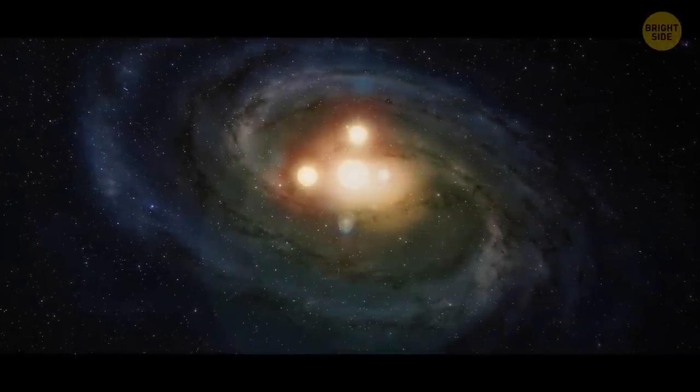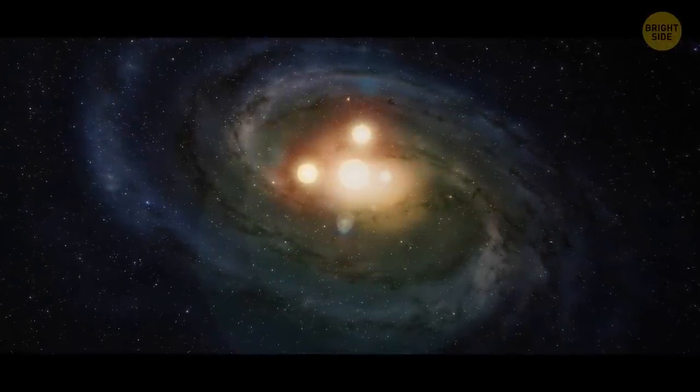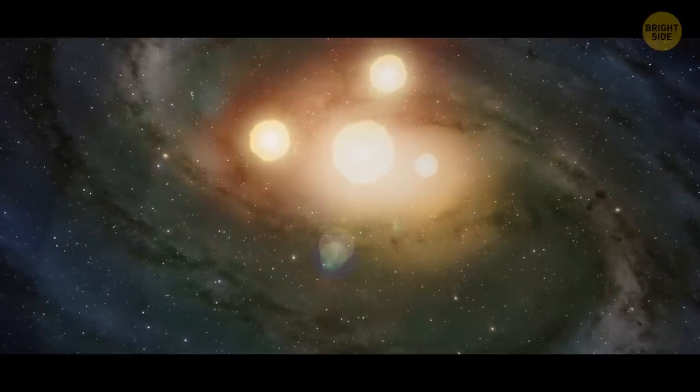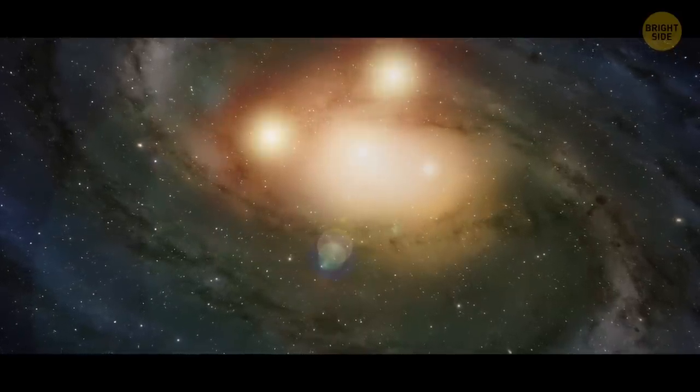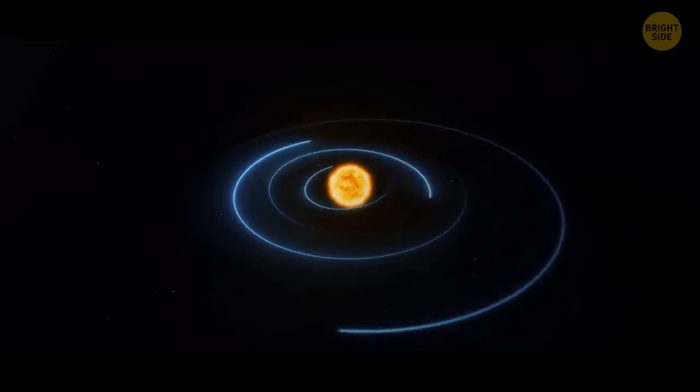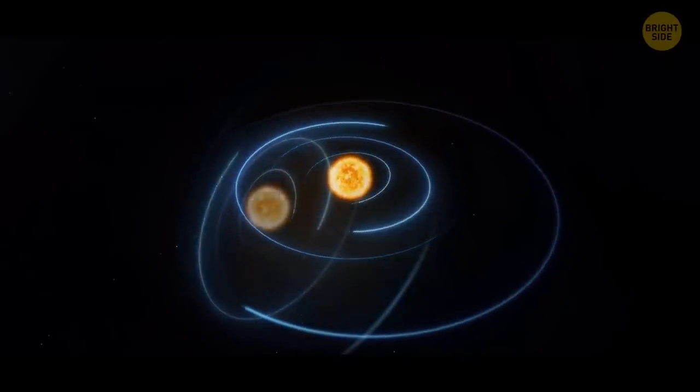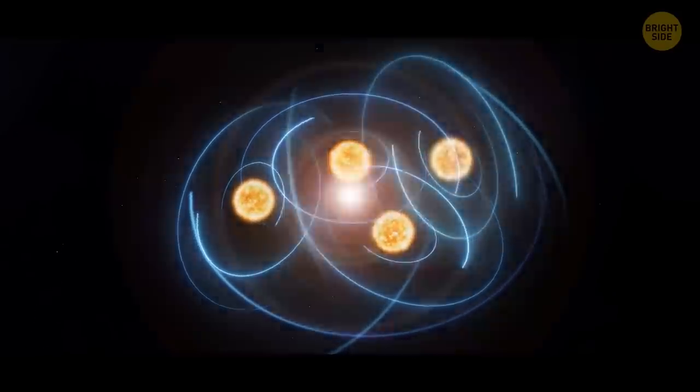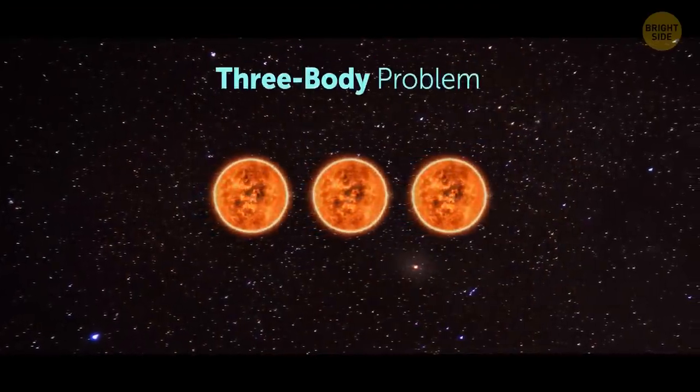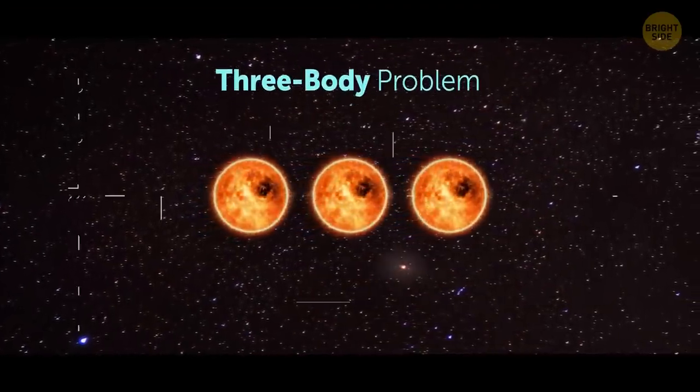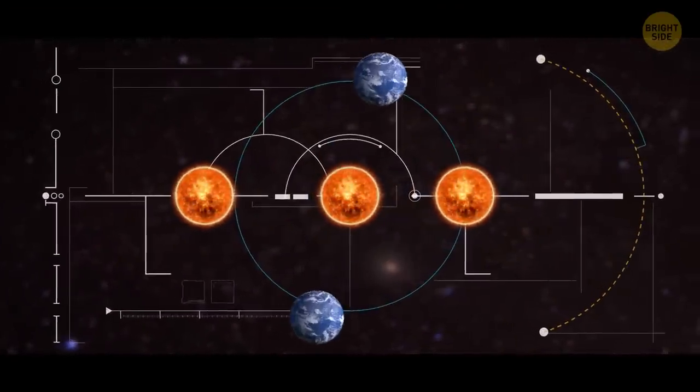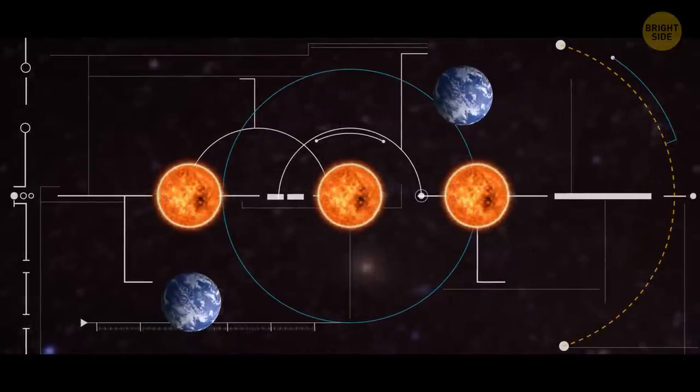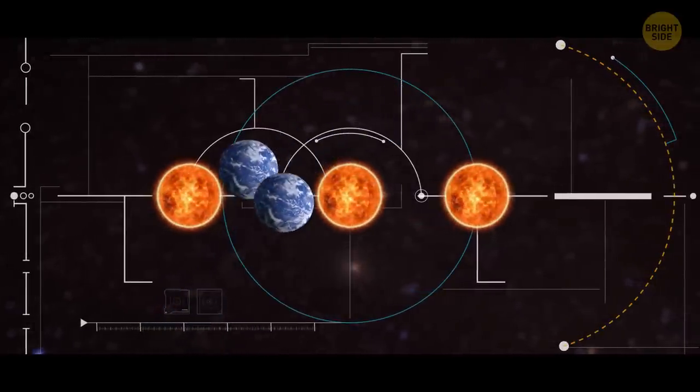But what about systems with four or even more stars? Is it even possible? Actually, yeah. But the more celestial bodies you add to the system, the more difficult it becomes. The orbits grow unstable. It's gonna be as chaotic as can be. In stellar mechanics, it's called the three-body problem. It says that it's very difficult to predict the orbits of bodies in such systems. In most cases, they turn out to be very random and unique.